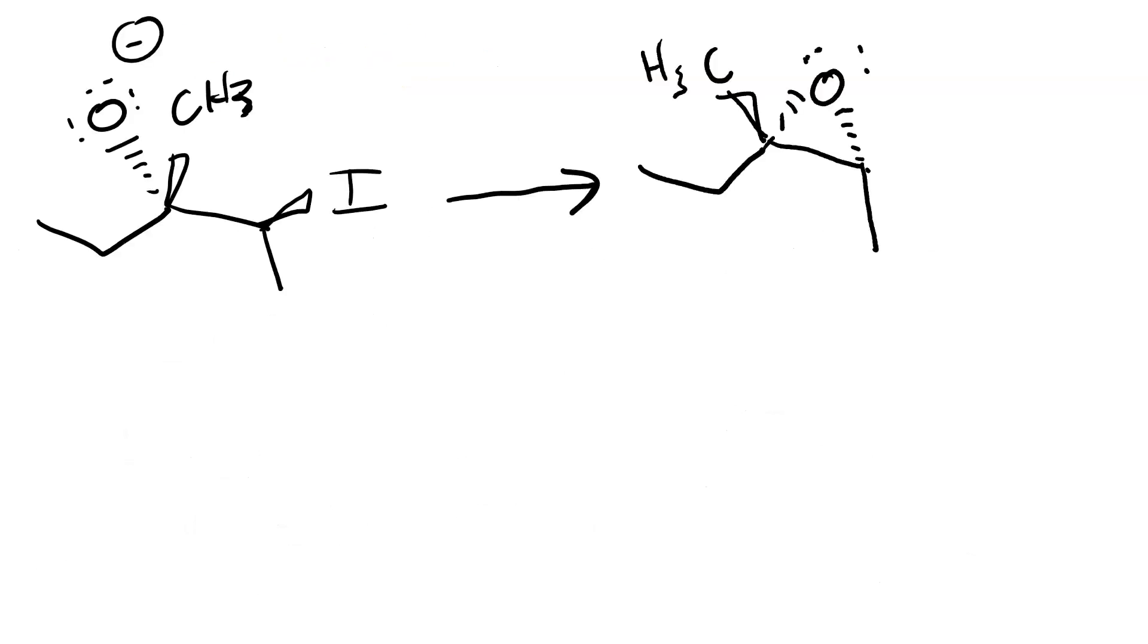The alkoxide then performs intramolecular SN2 on the alpha carbon of the alkyl halide. We get nucleophilic attack and loss of a leaving group, which produces this compound. It's got a three-membered ring in it.